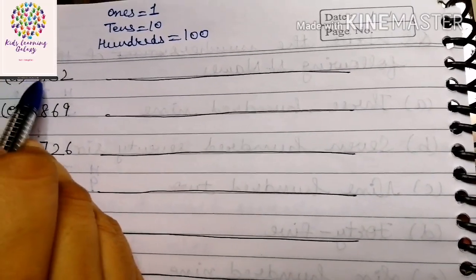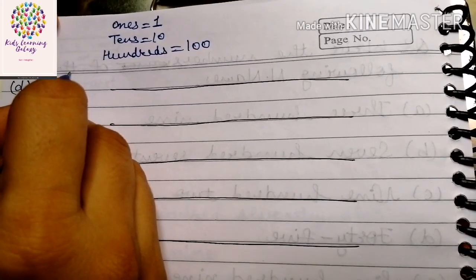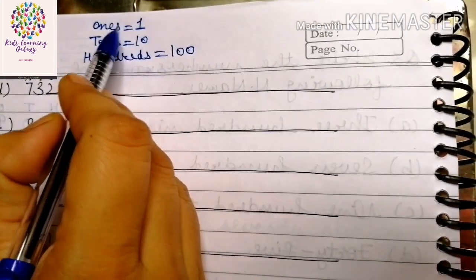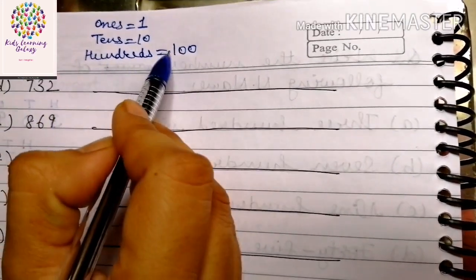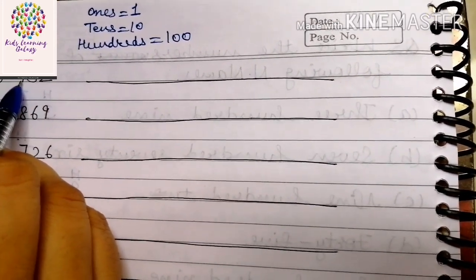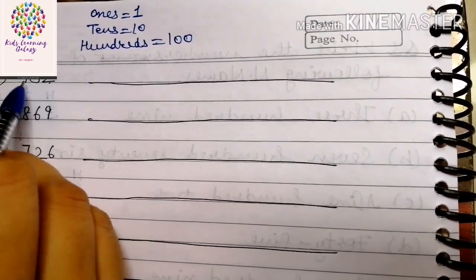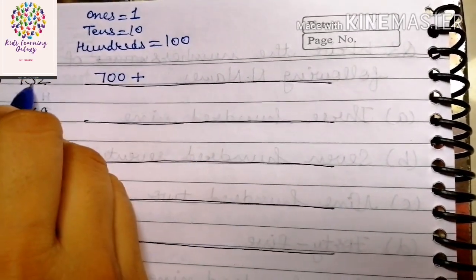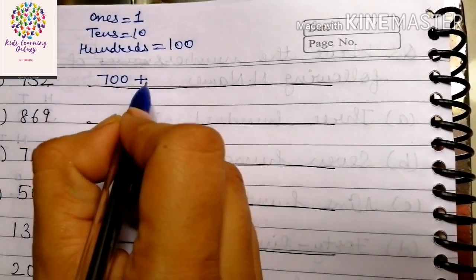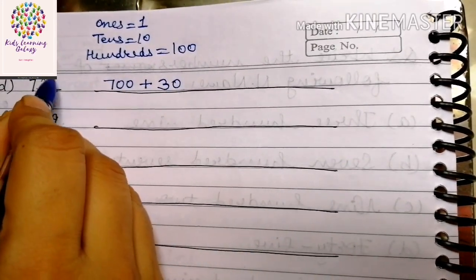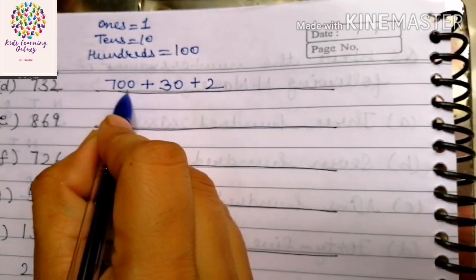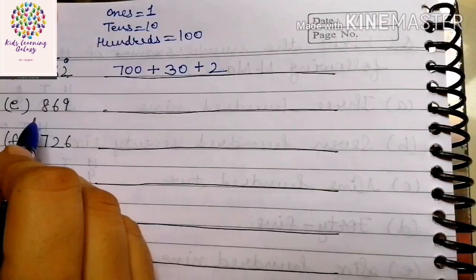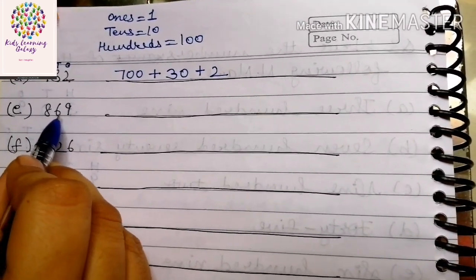Part D is 732. Write down the places first: ones, tens, and hundreds — 1, 10, 100. The expanded form of 732 is: 7 multiplied by 100 is 700, plus 3 multiplied by 10 is 30, and 2 multiplied by 1 is 2. So the expanded form is 700 plus 30 plus 2.